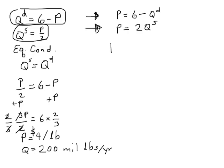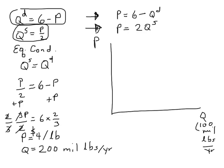Then when we draw, we know we've got price on the vertical, quantity on the horizontal. Let's remember that's 100 million pounds per year, price dollars per pound.